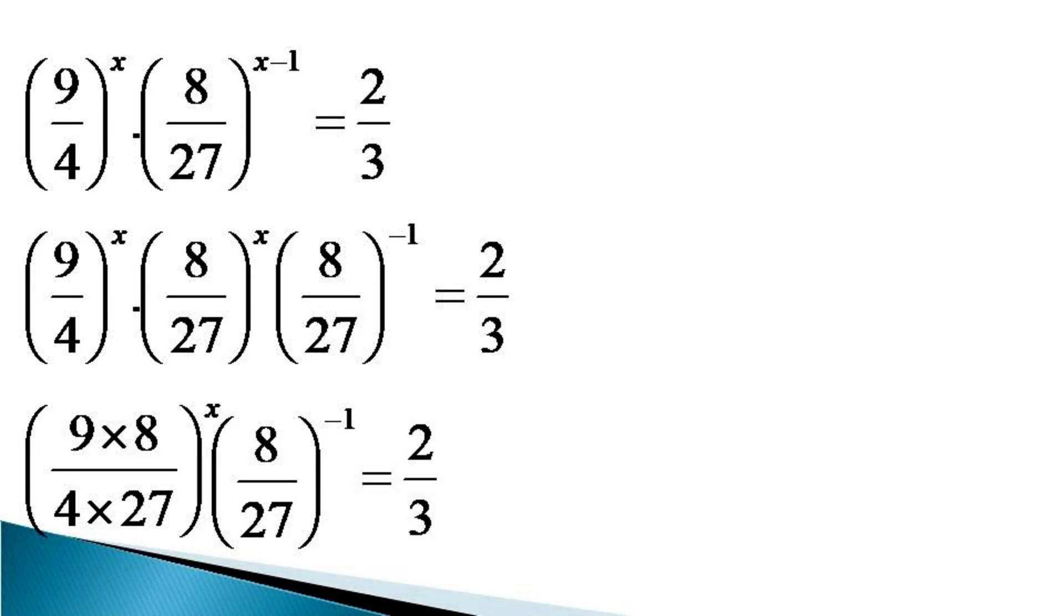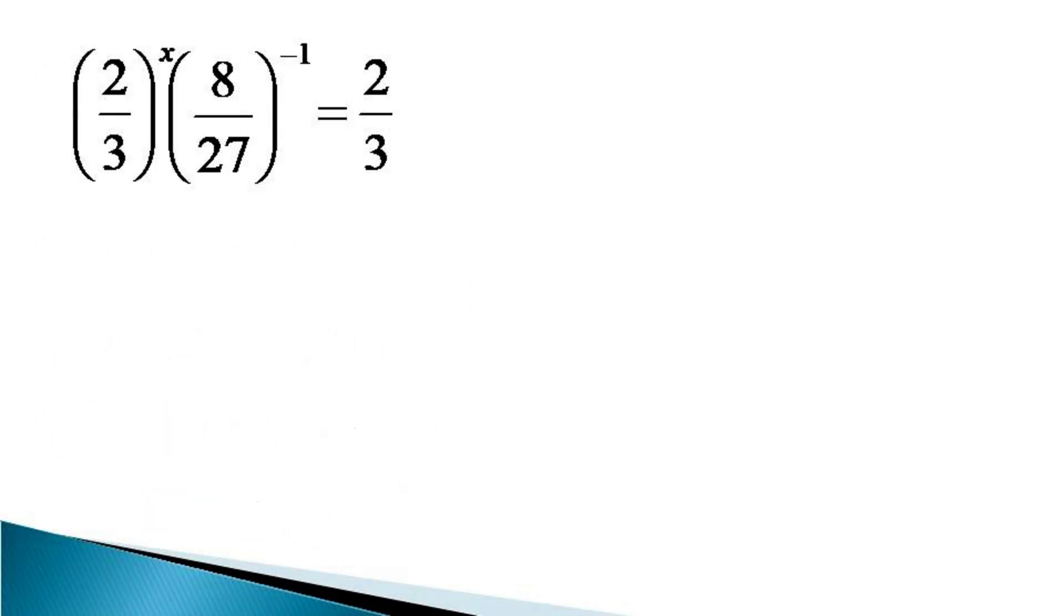On the left hand side, we manipulate the first term by dividing 27 by 9, which goes 3 times, and then 8 is divided by 4 resulting in 2. The resulting equation is (2/3)^x times (8/27)^(-1) equals 2/3.